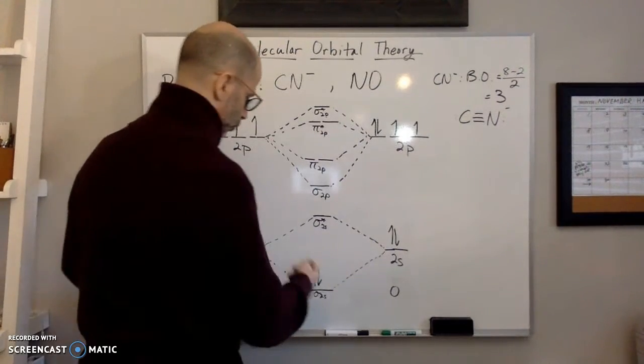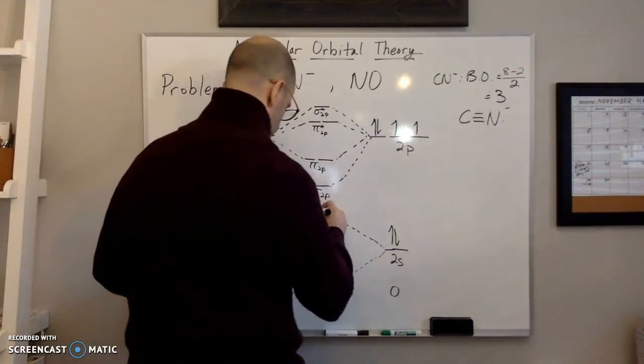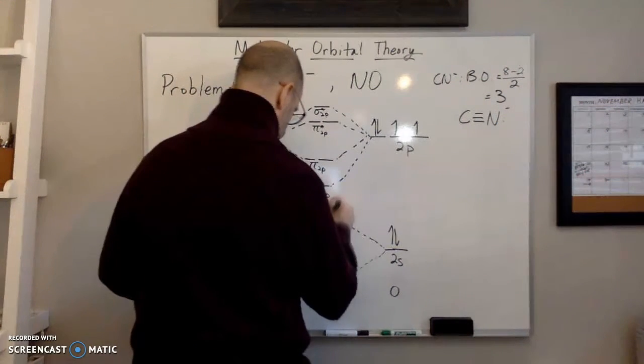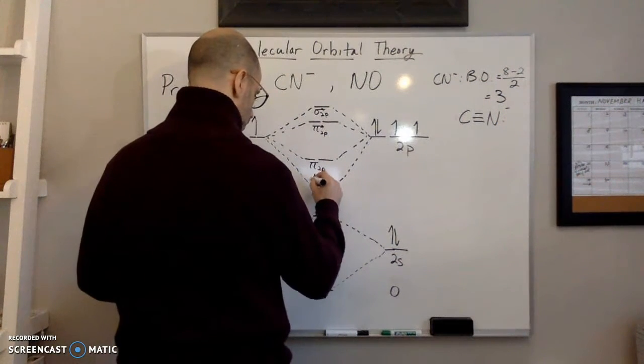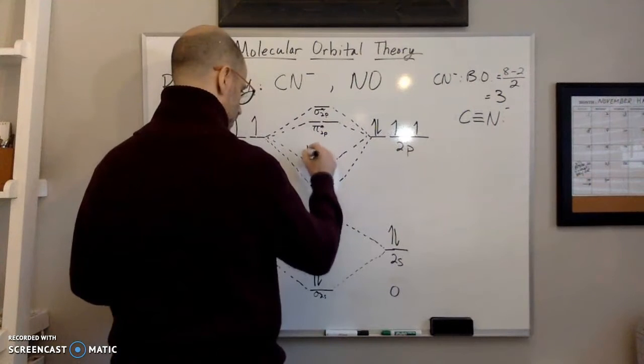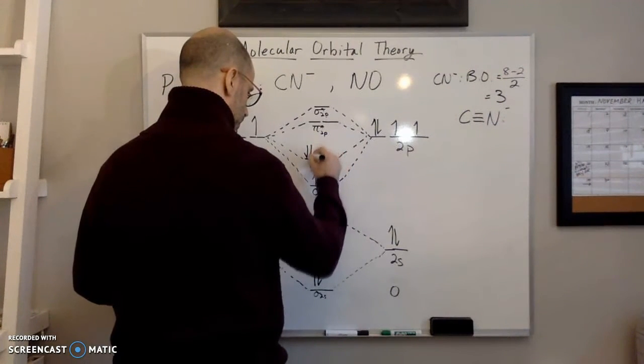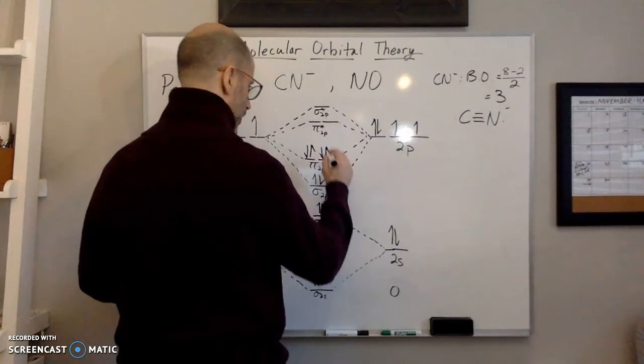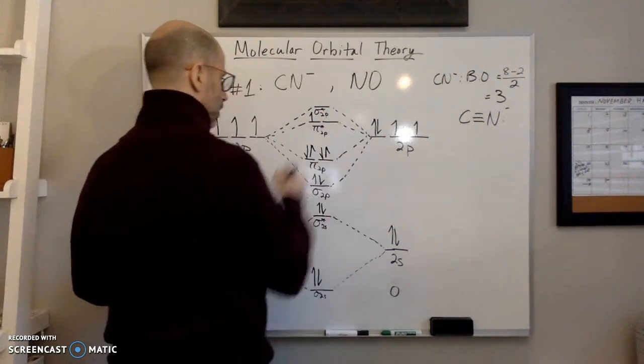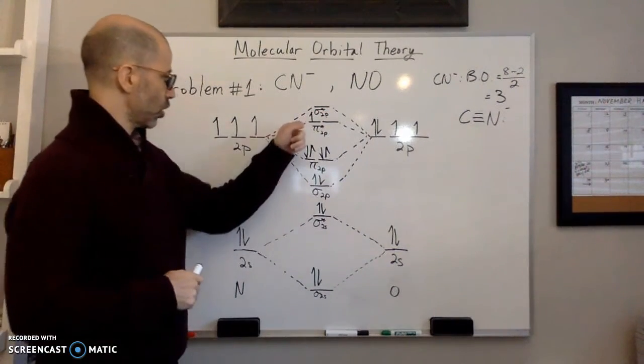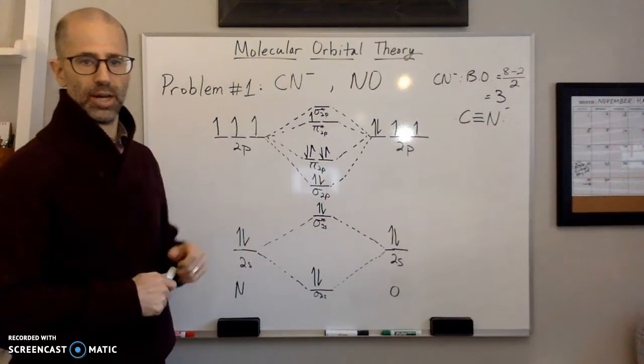So we have an odd number of electrons. This is a free radical. So we'll fill in the electrons. So we have 2 here. We have 1, 2 there. That's 4, 5, 6, 7, 8, 9, 10. And then 11 on top. So we have 1 unpaired electron.